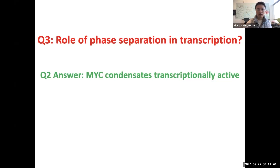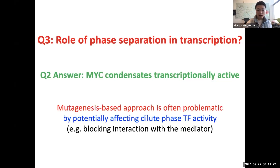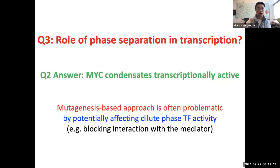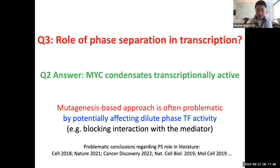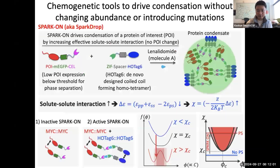The third question is: what is the role of phase separation in regulating the transcriptome? In the field, people use a mutagenesis-based approach to answer this, but this is often problematic because mutations can potentially affect dilute phase transcriptional activity — for example, by blocking interaction with the mediator. This is a problem in the field, and many published papers have problematic conclusions because of this.